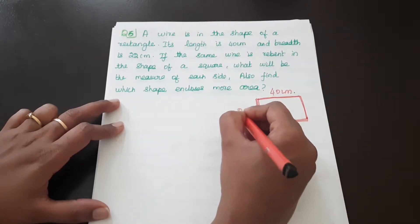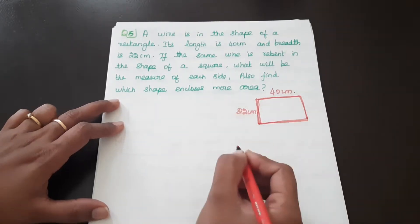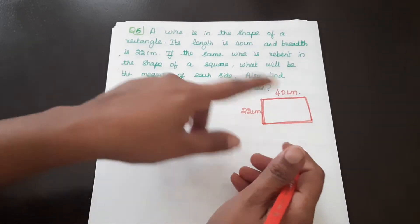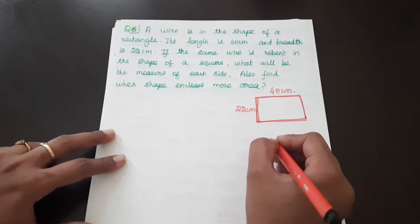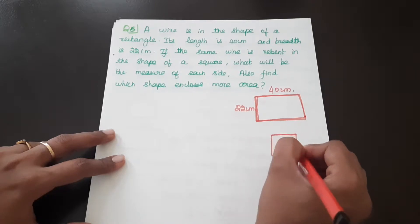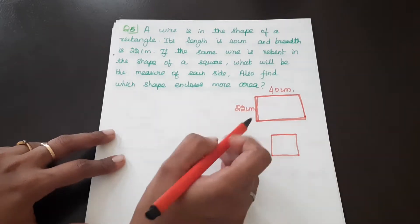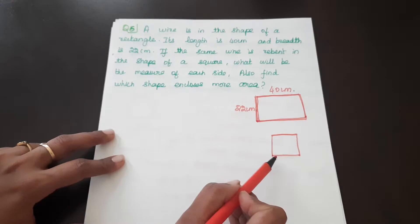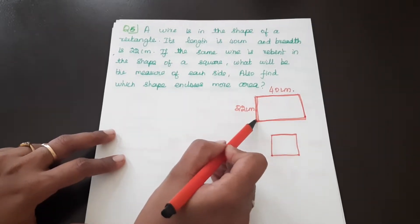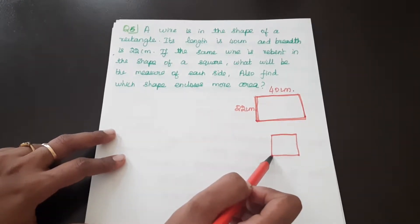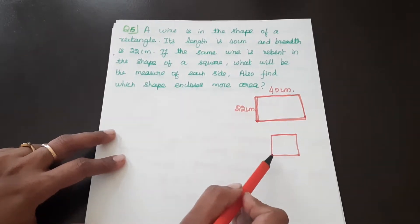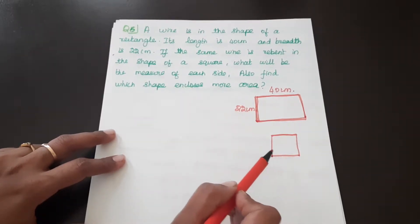The width is 22 cm. If the same wire is rebent into the shape of a square, the perimeter of the rectangle is equal to the perimeter of the square.